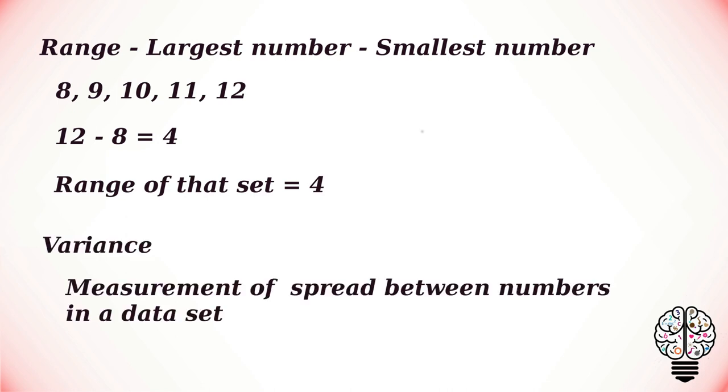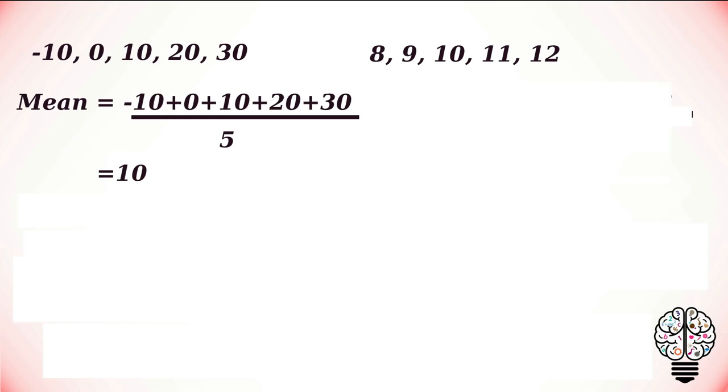Variance is a measurement of the spread between numbers in a data set. To explain variance, let us consider two data sets. The first data set contains -10, 0, 10, 20, and 30. And the other data set is 8, 9, 10, 11, and 12. The mean of the first data set is equal to 10.